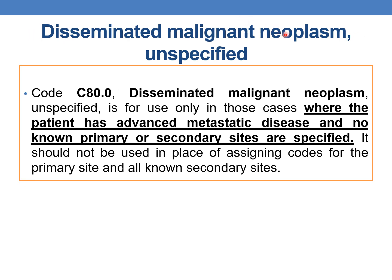Next guideline: Disseminated malignant neoplasm unspecified, category C80.0. C80.0 is used for cases where the patient has advanced metastatic disease and no known primary or secondary sites are specified. It should not be used in place of assigning codes for the primary site and all known secondary sites. C80.0 is appropriate only when there is advanced metastatic disease and no known primary or secondary sites.